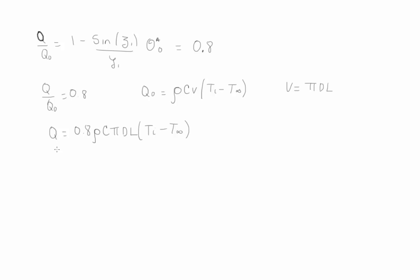Since we're looking for Q as a function of L, we have Q over L equals 0.8 times the expression. For this particular problem, this value becomes negative 2.73 times 10 to the 7 joules per meter. The negative value indicates that the heat goes from the oil to the pipe.